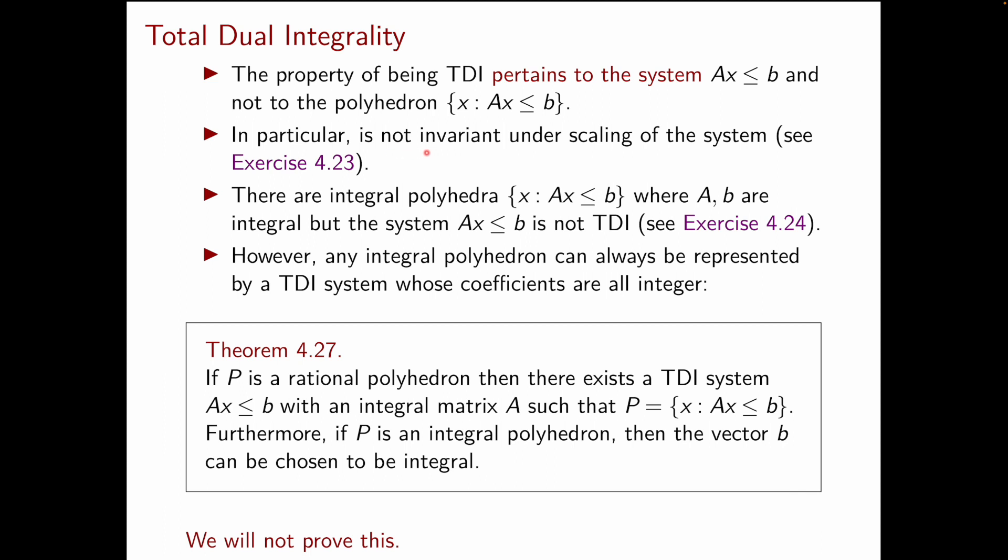In particular, you could have the same polyhedron defined by two different systems of linear inequalities such that one of them is TDI and the other one is not. In fact, you can break the TDI property even just by scaling one inequality, as you can see in exercise 4.23. The other important heads up that I want to give you is that the theorem that we have just seen is not an if and only if. Namely, there are integral polyhedra given by a system Ax ≤ b, where the system is not TDI, even if both A and b are integral.